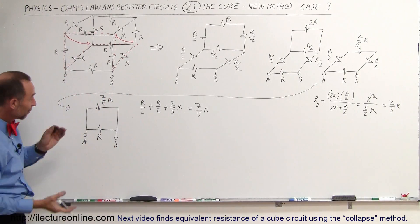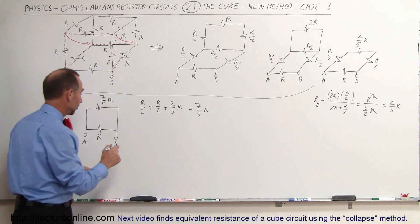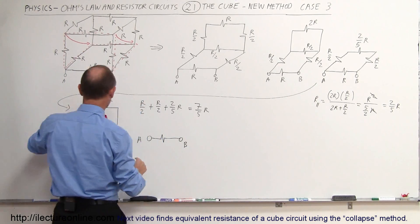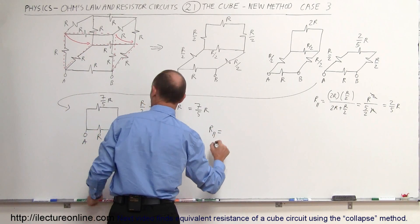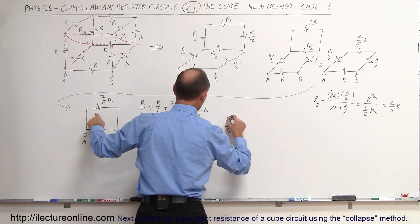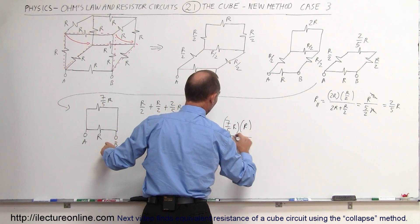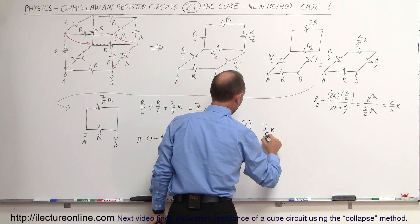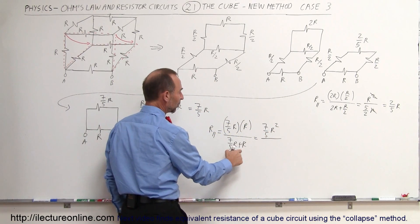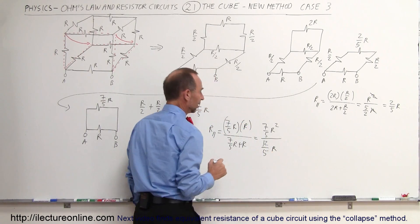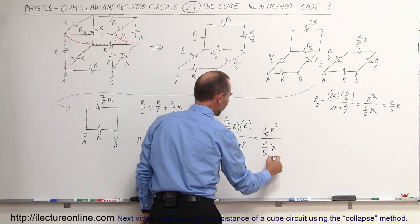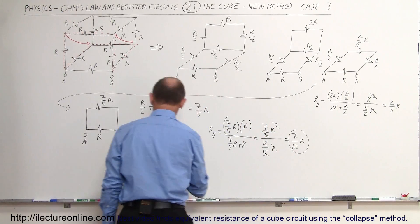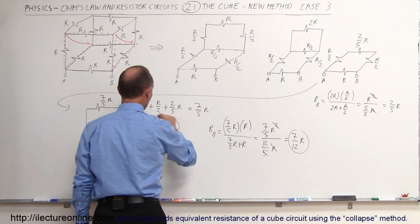Now we have two resistors in parallel between A and B, so we use the equivalent parallel resistance technique. Resistance in parallel equals the product (7/5 R × R) divided by the sum (7/5 R + R). This simplifies to 7/5 R² divided by 12/5 R. The fives cancel out, and we end up with 7/12 R as the equivalent resistance between A and B.